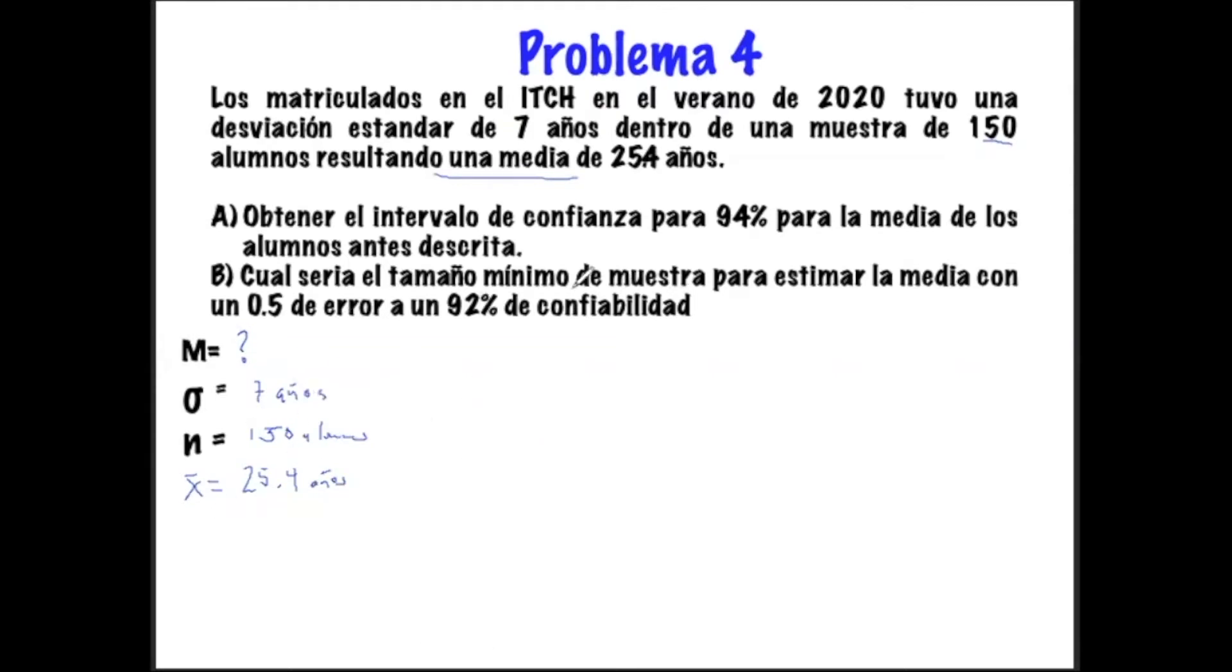Entonces, ¿qué es lo que nos está pidiendo aquí? Que nosotros veamos un tamaño de N mínimo para un intervalo de confianza condicionado a 0.5 de error y a un 92% de nivel de confiabilidad. Entonces, vamos a partir de calcular nuevamente nuestra Z alfa medios para saber a qué nivel de confianza vamos a trabajar.